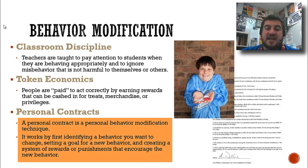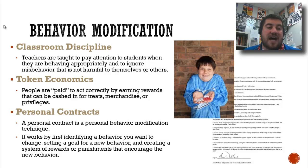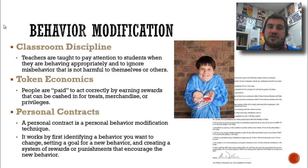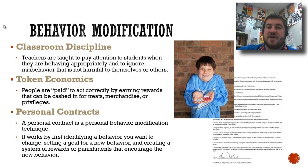Personal contracts identify a behavior you want to change or prevent, set a goal for the new behavior, and create a system of rewards or punishments that encourage the new behavior. For example, when I turned 16 and reached driving age, my parents presented a personal contract to me about drinking and driving. They said: if you're in a situation where you'd like to get home safely, call us and we will pick you up — no questions asked. They were trying to prevent the dangerous behavior of drinking and driving, and if I was ever in that situation, they wanted me to be safe and able to get home.